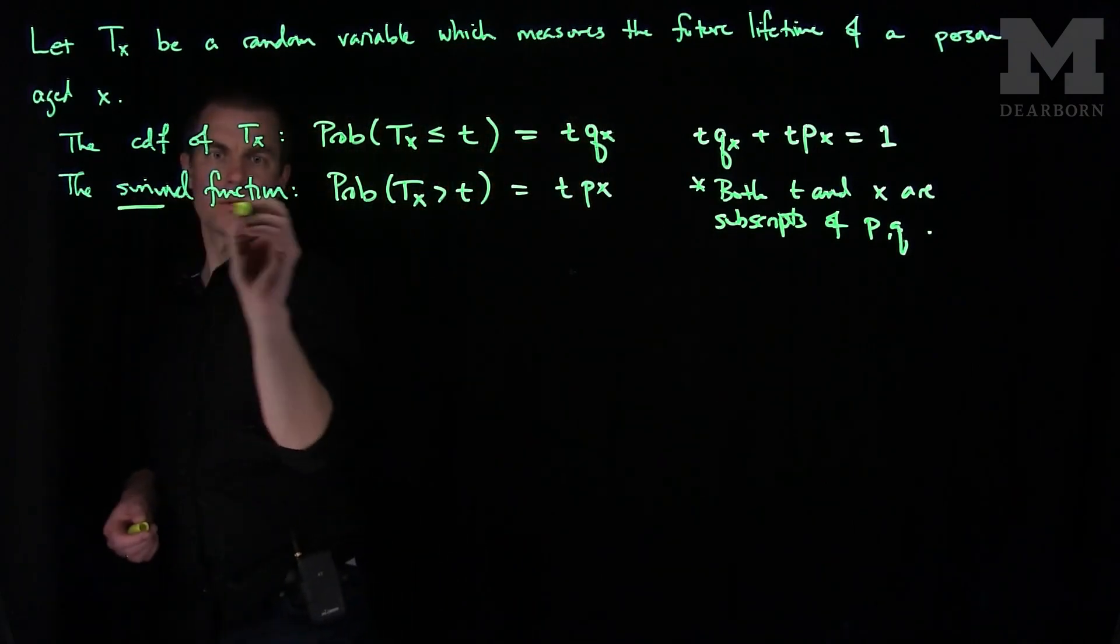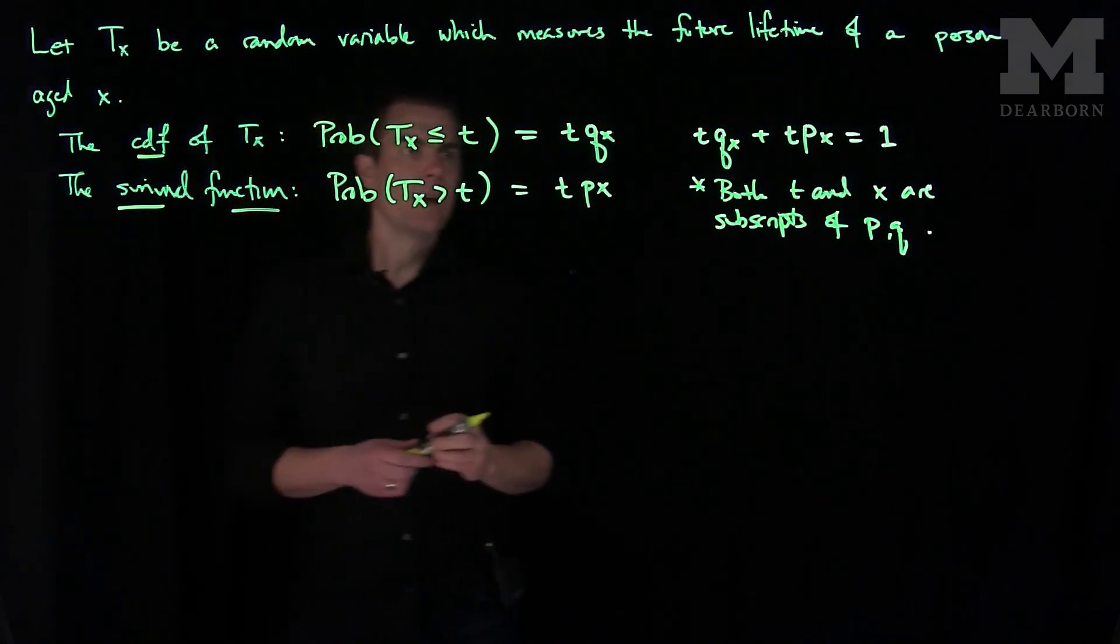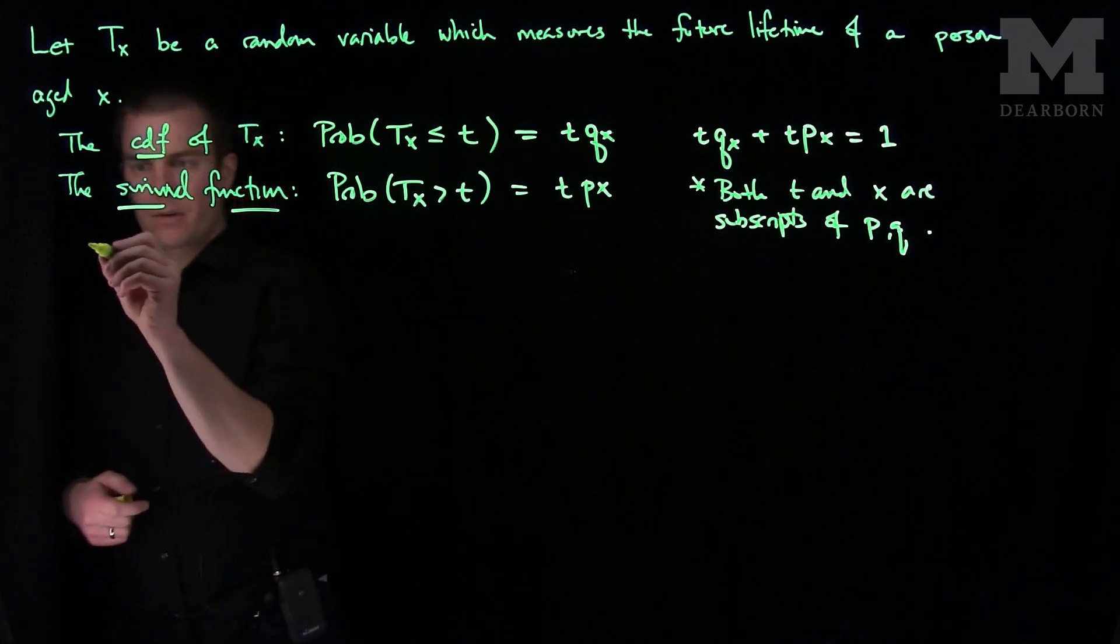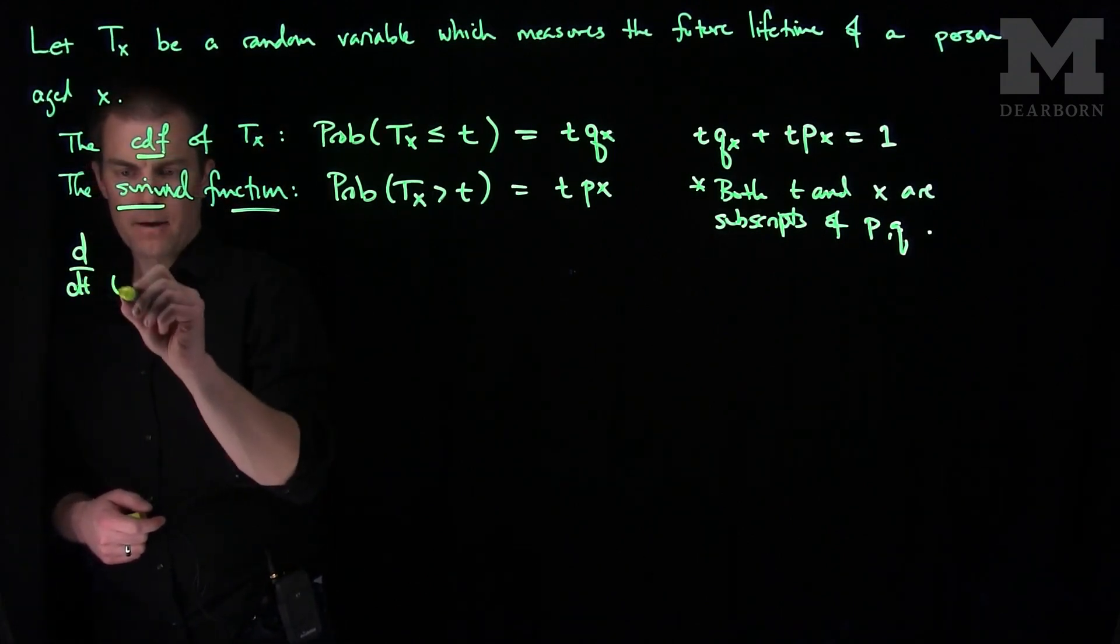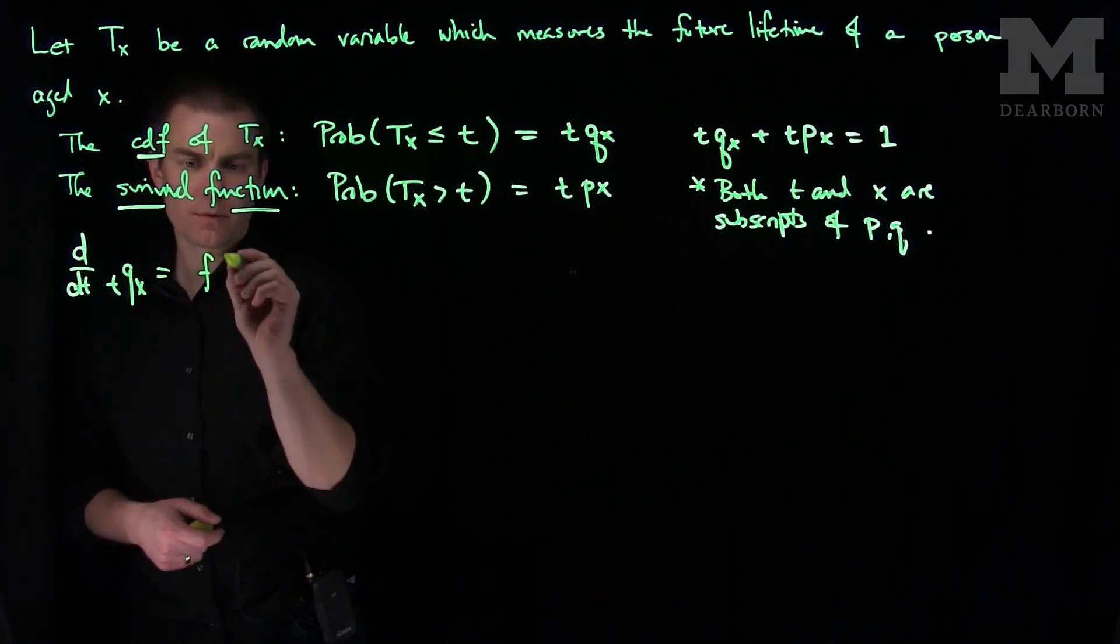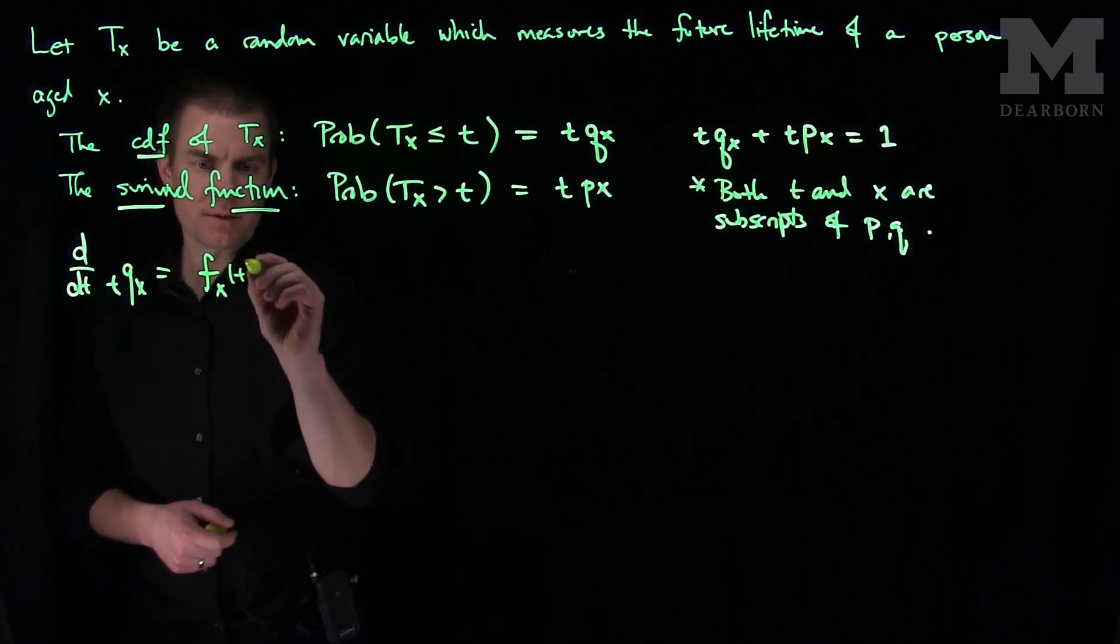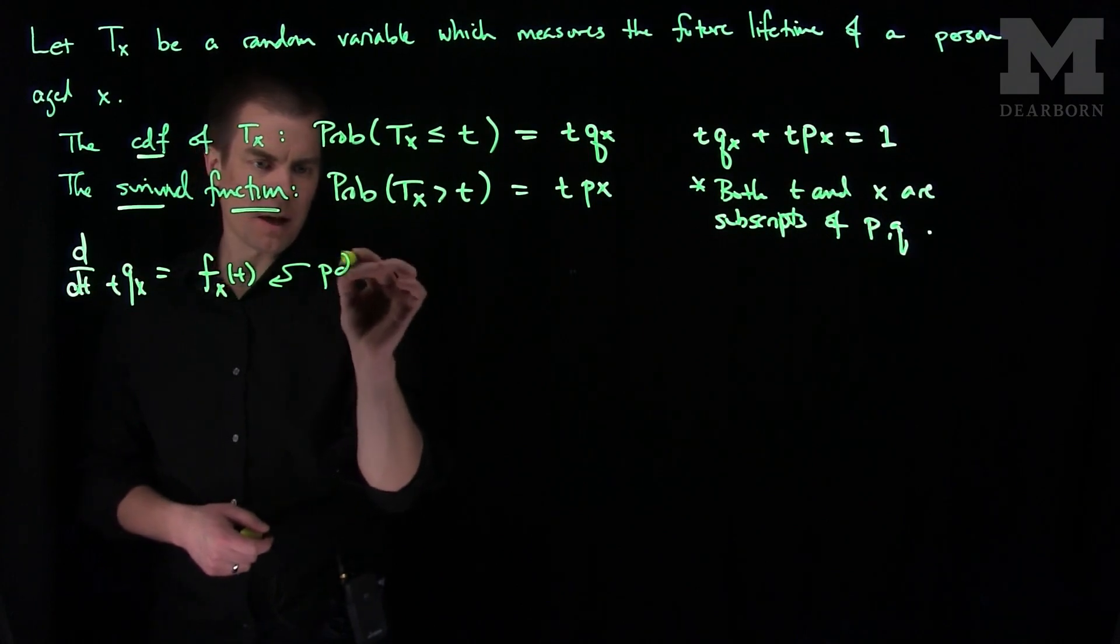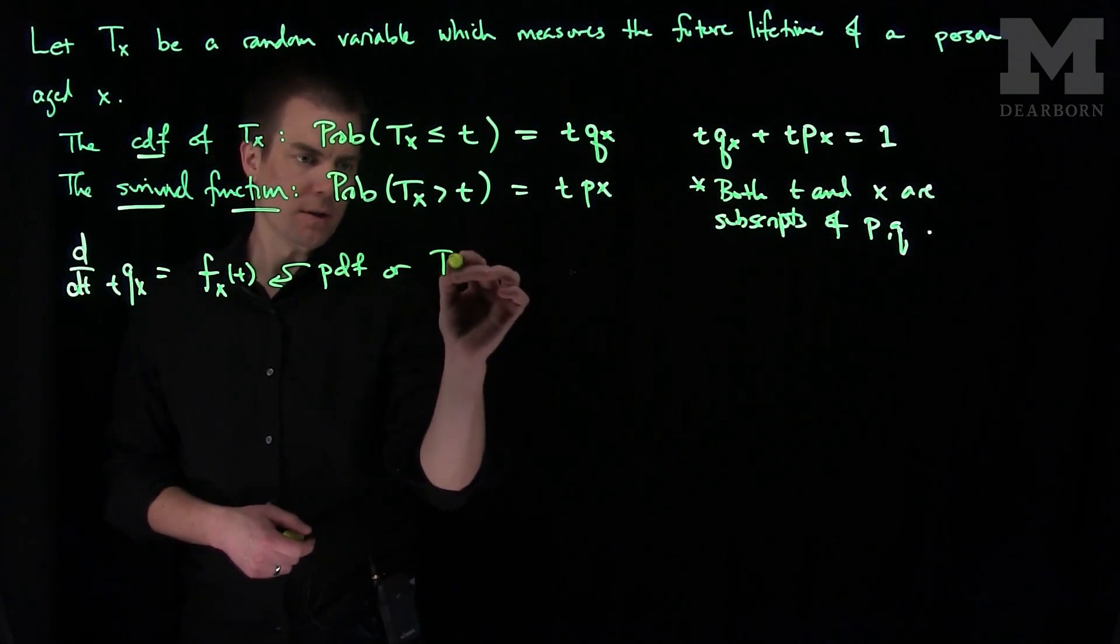So we have our survival function and the CDF. We note that the derivative with respect to t of tqx is equal to f_x of t, and this is the PDF of T_x.